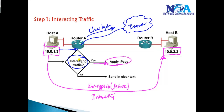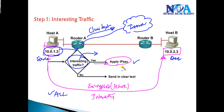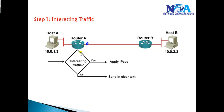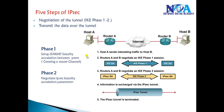Interesting traffic can be defined using an ACL. I'll define an ACL statement that matches the source and destination. If it matches, IPSec will be applied; if it doesn't match, the traffic is not dropped but is sent in clear text. By default, if you do not define any interesting traffic, all traffic leaving the interface will be encrypted automatically — which is usually not what you want.